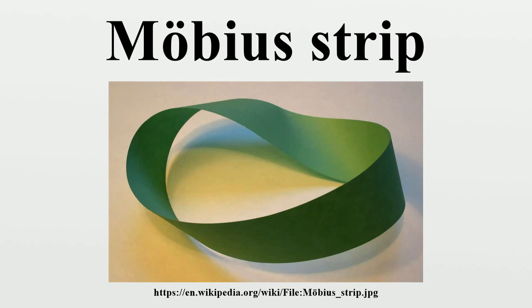Möbius band with round boundary. The edge, or boundary, of a Möbius strip is homeomorphic to a circle. Under the usual embeddings of the strip in Euclidean space, the boundary is not a true circle. However, it is possible to embed a Möbius strip in three dimensions so that the boundary is a perfect circle lying in some plane. A much more geometric embedding begins with a minimal Klein bottle immersed in the three-sphere, as discovered by Blaine Lawson. We then take half of this Klein bottle to get a Möbius band embedded in the three-sphere. The result is sometimes called the Sudanese Möbius band, where 'Sudanese' refers not to the country Sudan but to the names of two topologists, Sue Goodman and Daniel Asimov.